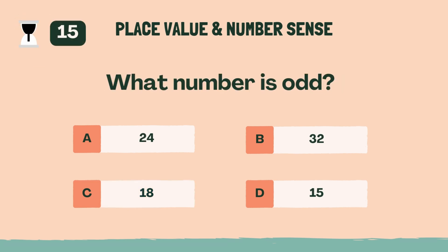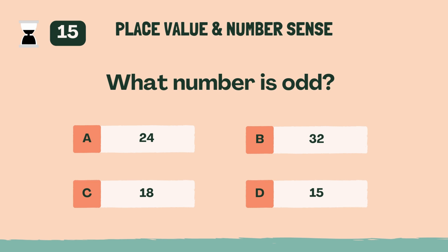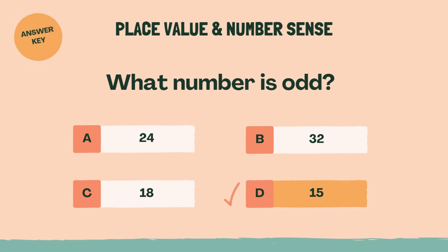What number is odd? The answer is D, 15.